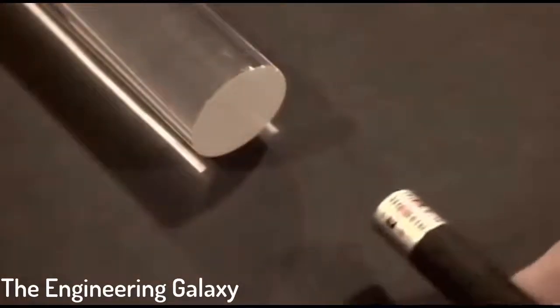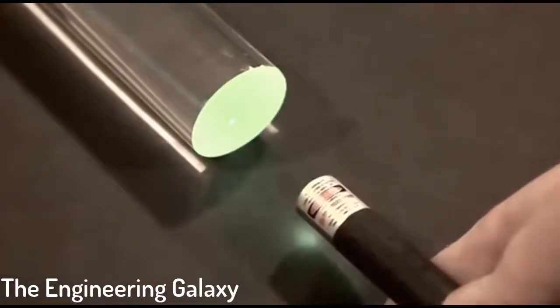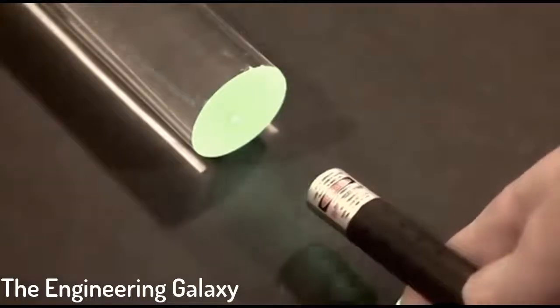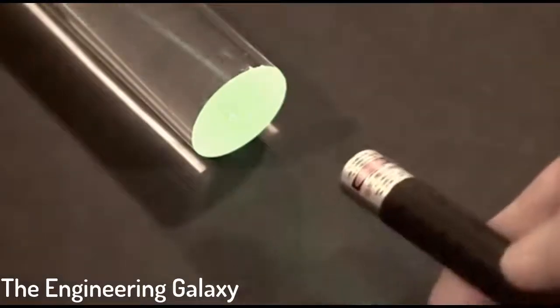For our light source, we're going to use a laser pointer. Here you can see how it is scattered by the imperfect finish on the end of the plastic rod, and how light is carried down the rod.